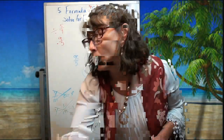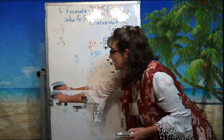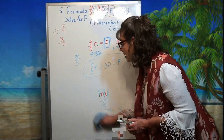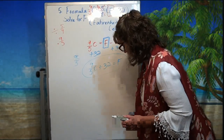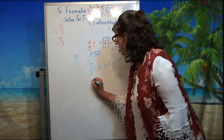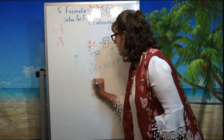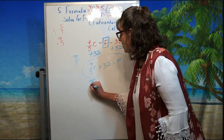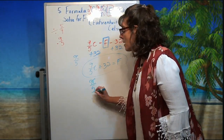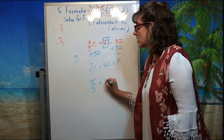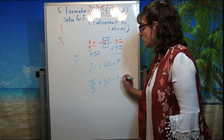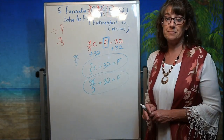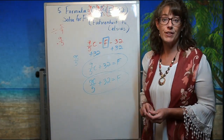If you prefer to write it as nine C over five, that's perfectly fine. Either form is acceptable. Just make sure when you add 32, you're adding it to the entire side — not just the numerator and not just the denominator.